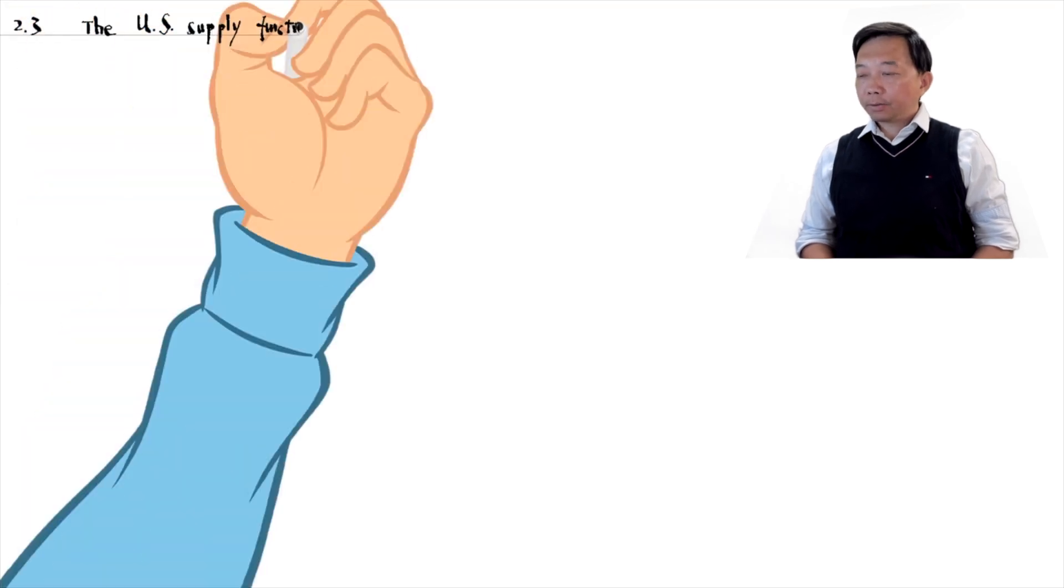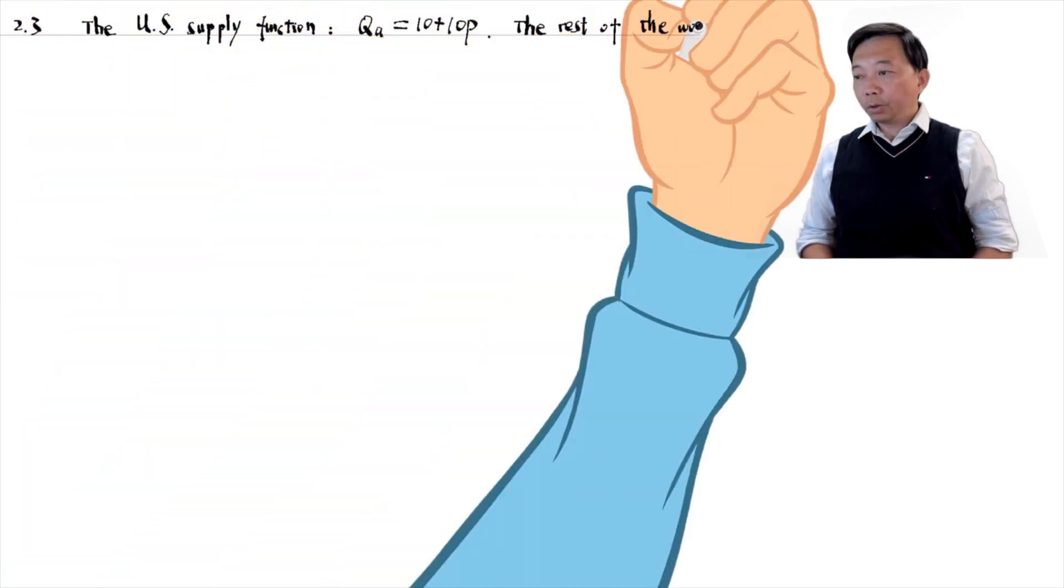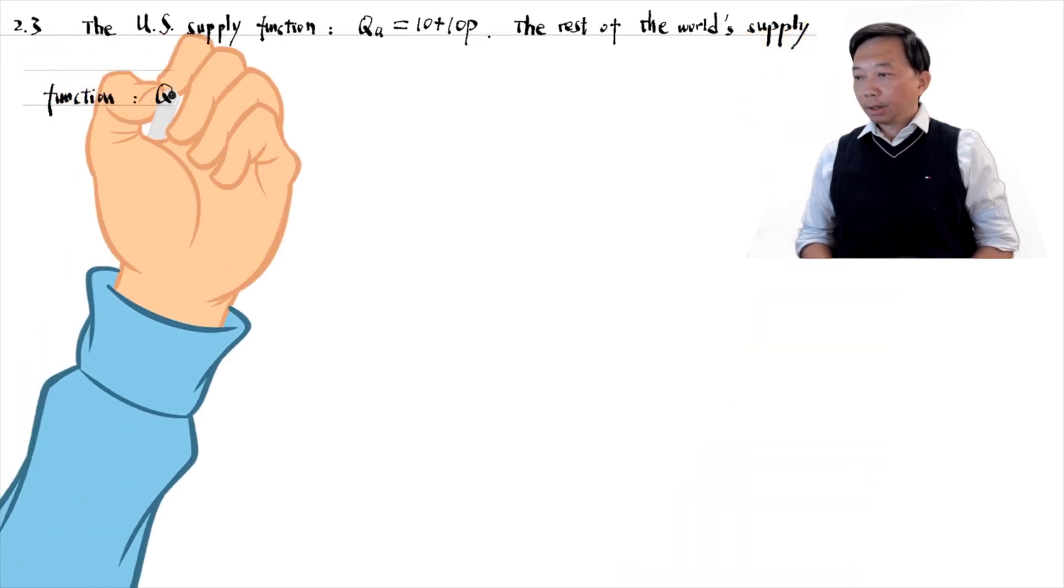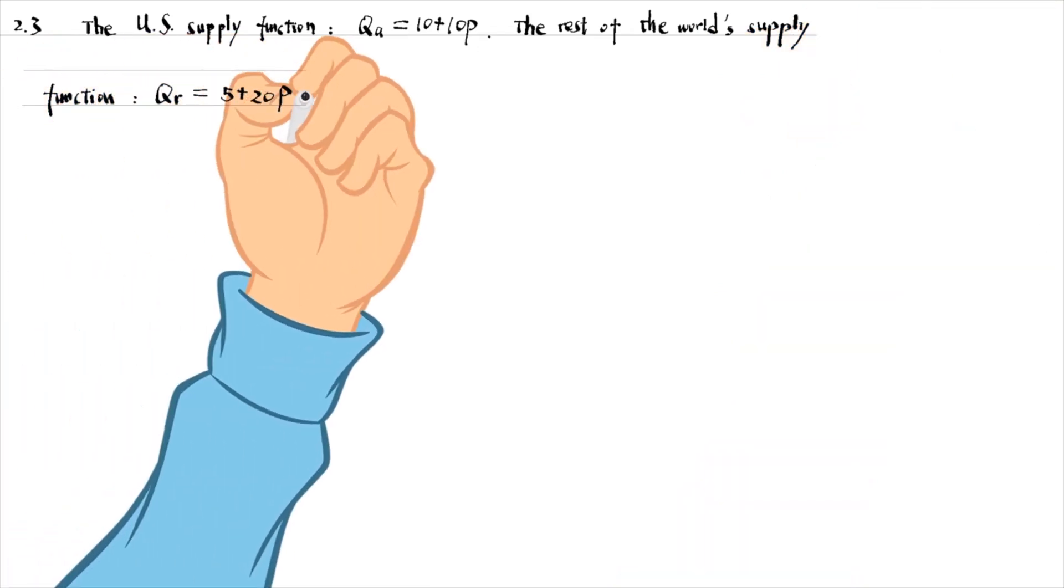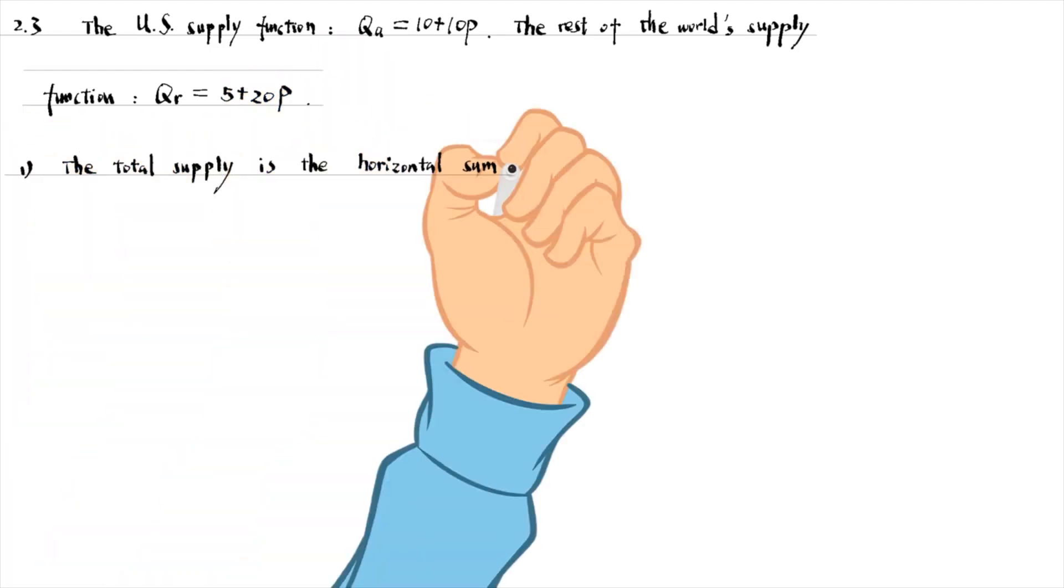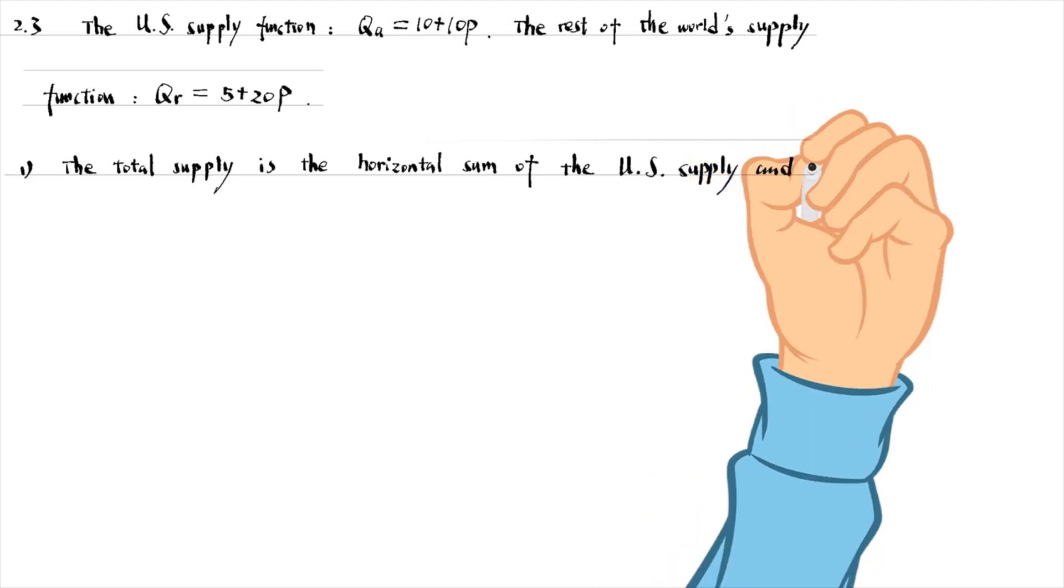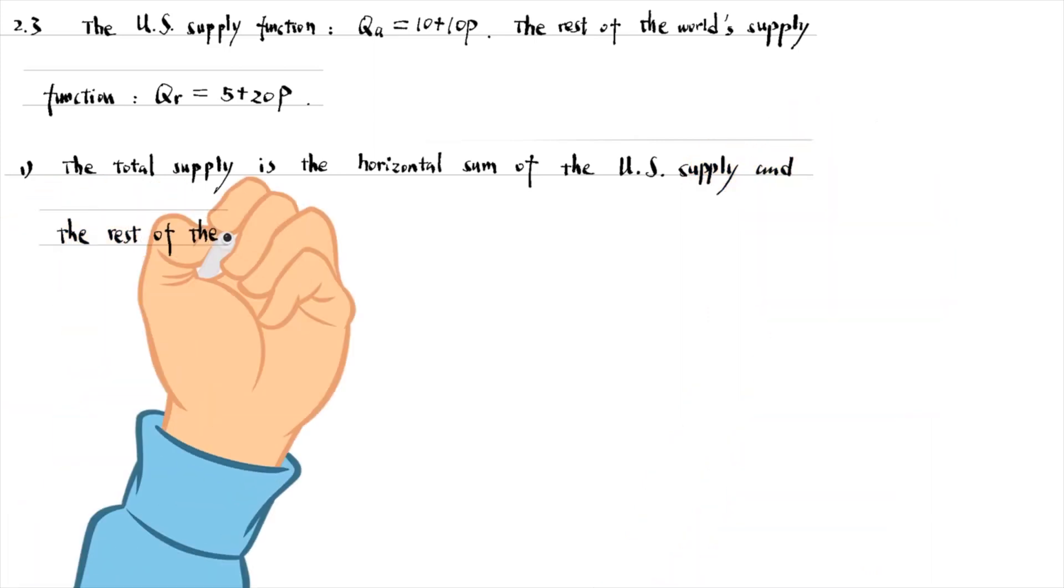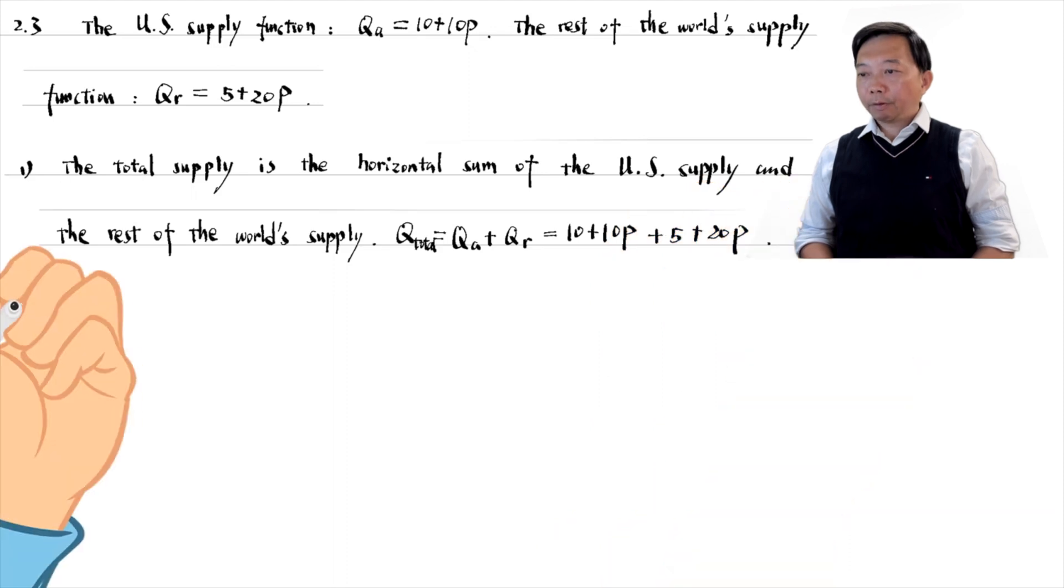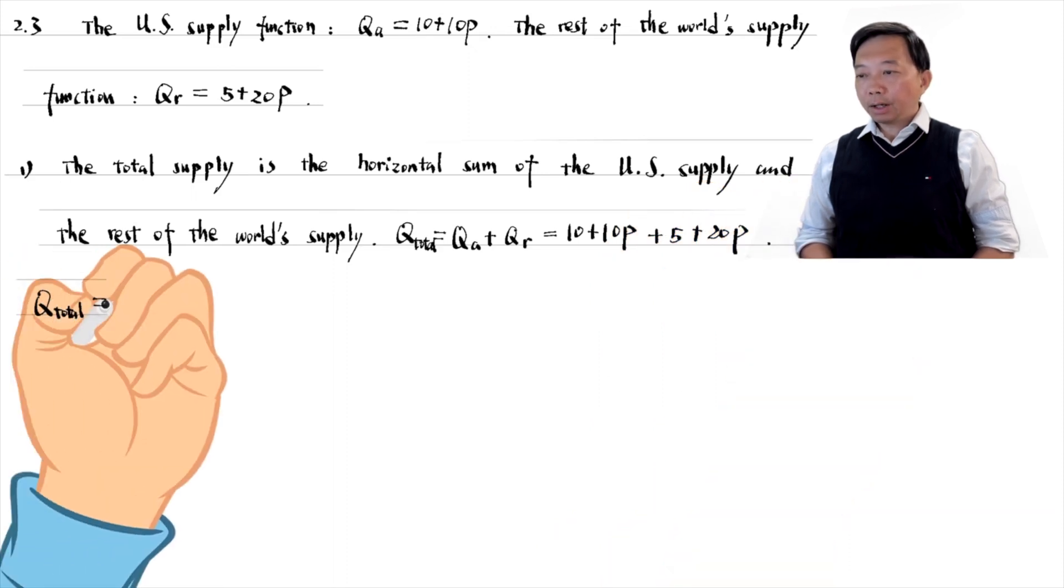The total supply is the horizontal sum of the US supply and the rest of the world's supply. Q total equals 15 plus 30 times P.